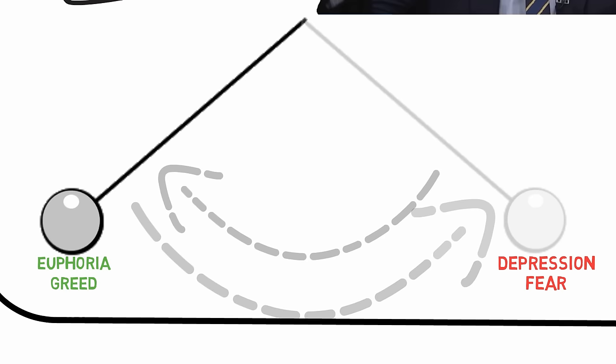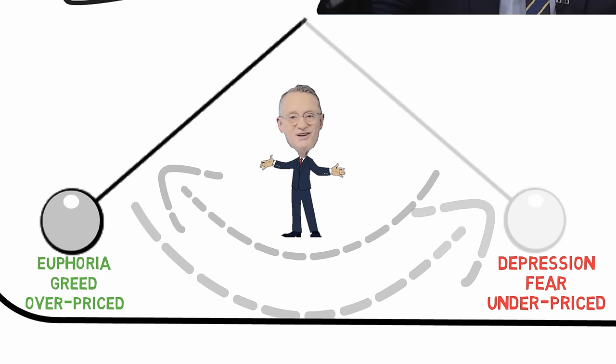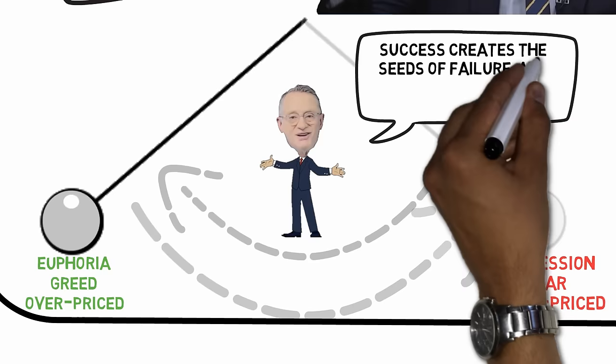Cycles are self-correcting, and they reverse on their own. Success creates the seeds of failure, and failure creates the seeds of success. Periodically, investors decide that a trend is never-ending.